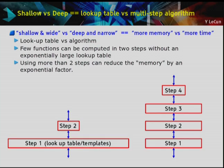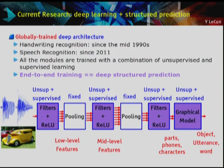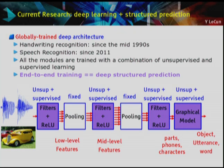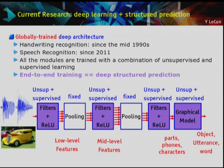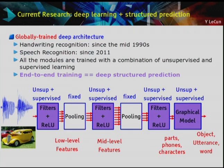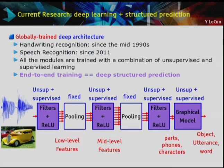A lot of current research goes into learning algorithms and architecture design, and where the field is heading is combining supervised and unsupervised learning along with techniques more appropriate for problems requiring multiple outputs — things like translation, where a French sentence can be correctly translated into English in several equally valid ways. It's difficult to train a neural net to produce just one, so you need other techniques. Same with speech recognition.